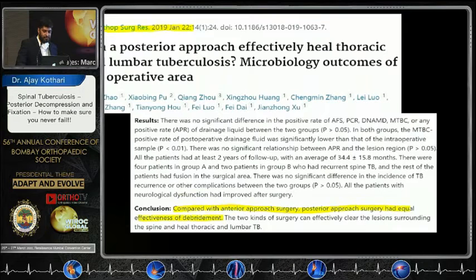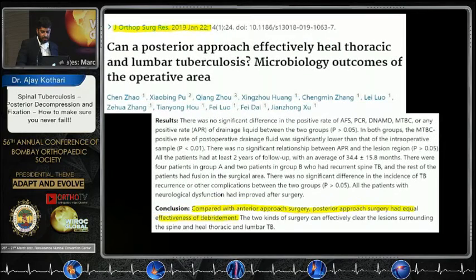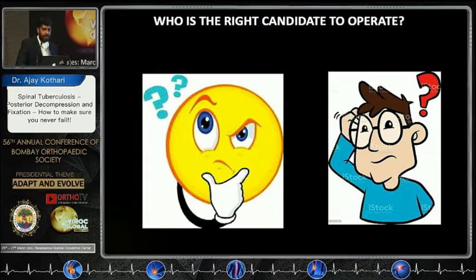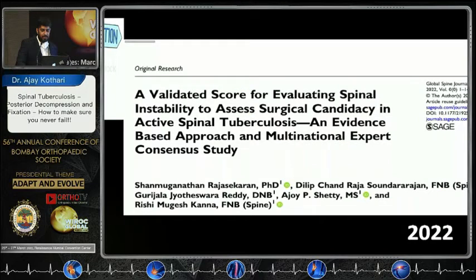With advances in technique and technology, we are now doing the posterior approach very effectively and safely. This is the latest article by Gen Zhao, comparing anterior versus posterior and showing equal effectiveness of debridement with posterior surgery. There are also various other articles discussing posterior-only approaches in thoracic and thoracolumbar spine tuberculosis.